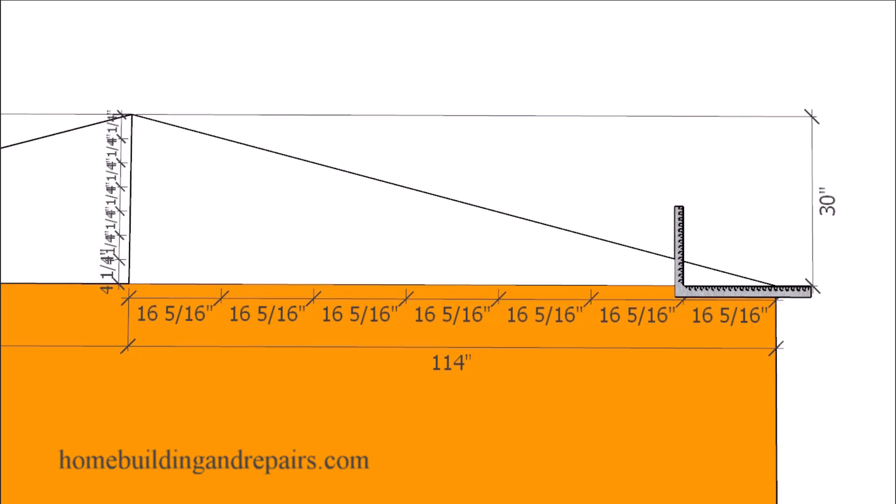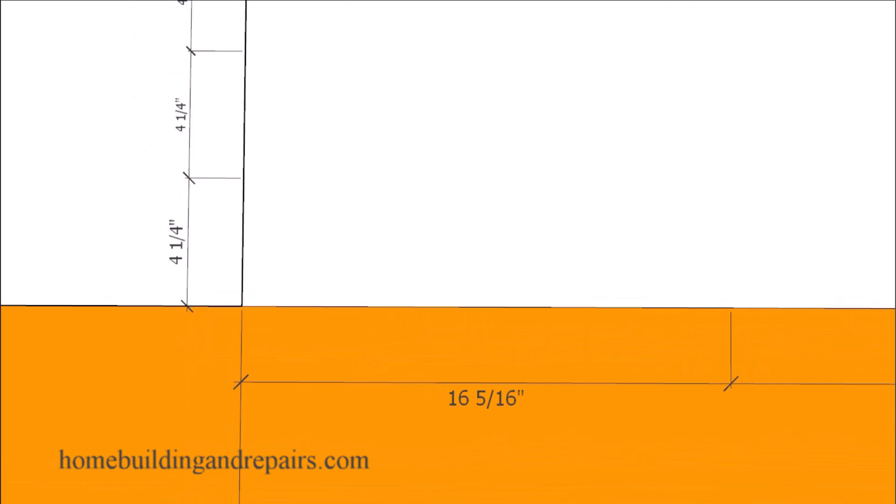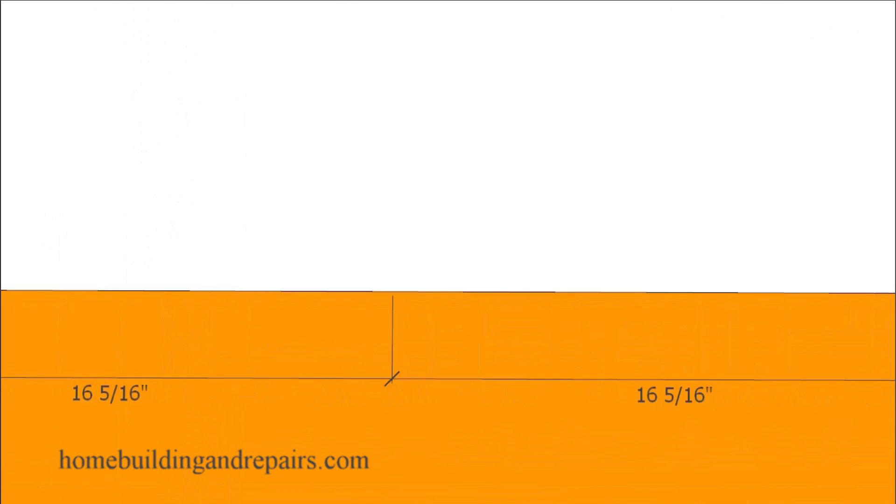And like I said, you can use other numbers. We've used five and six. Now let's go to seven. And if I divide 114 by seven, I'm going to get 16.28 inches. If I divide 30 by seven, I'm going to get 4.28 inches. And those are the numbers that I'm going to be able to use to set up the framing square with.